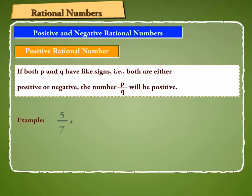Example: 5 by 7, 16 by 12, minus 3 by minus 5, minus 10 by minus 21 are all positive rational numbers.